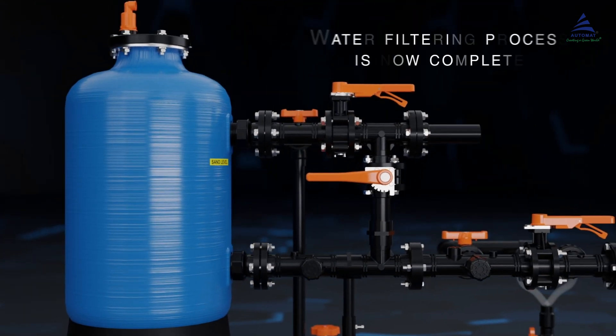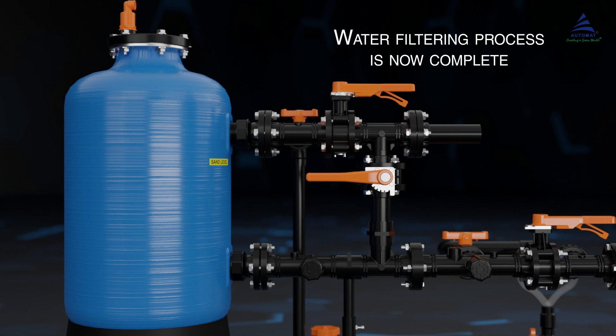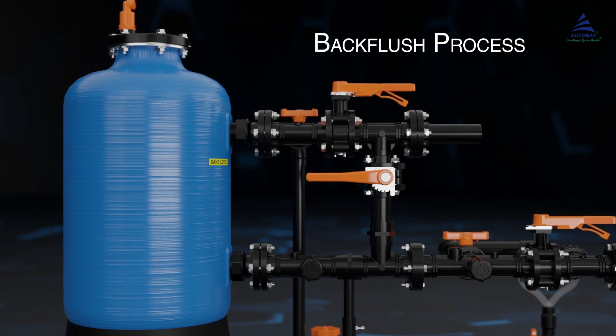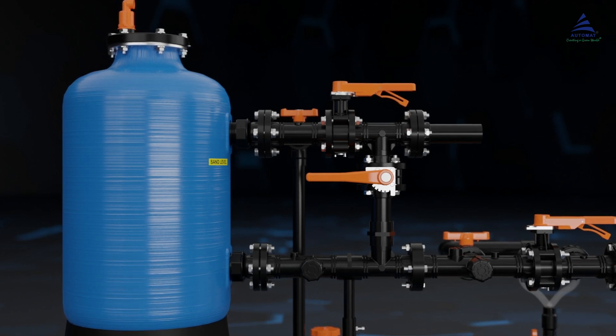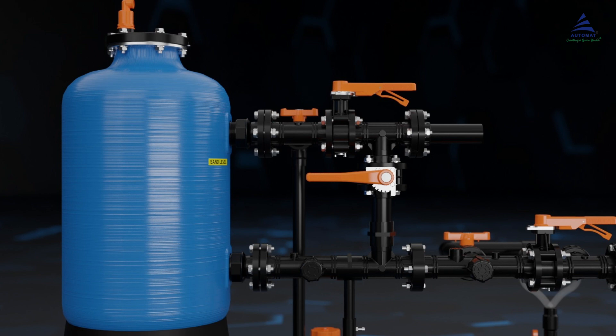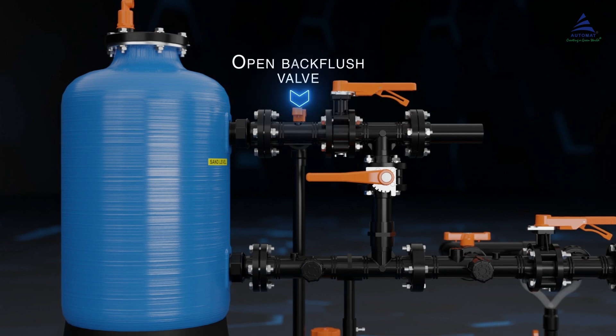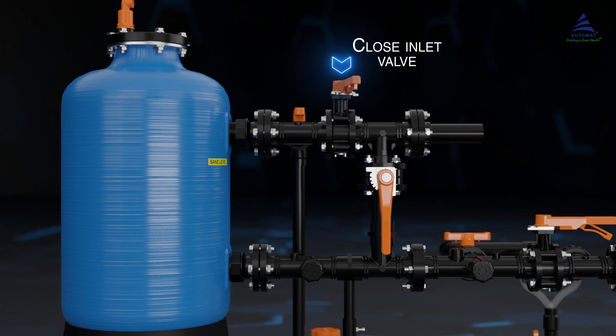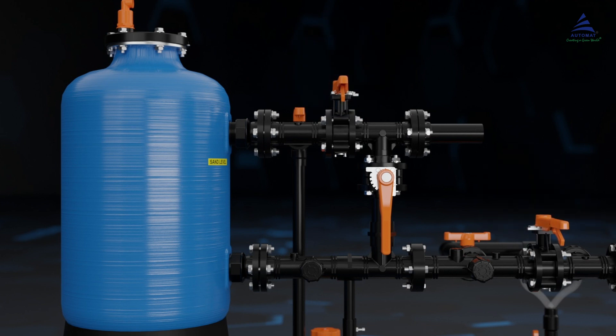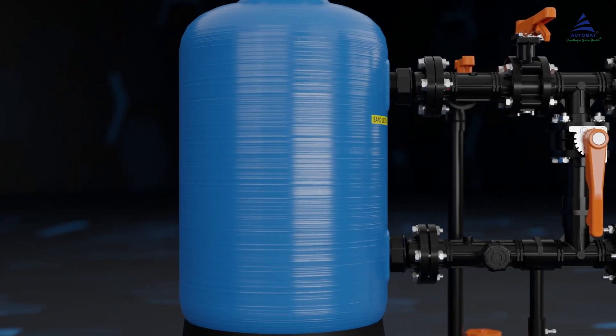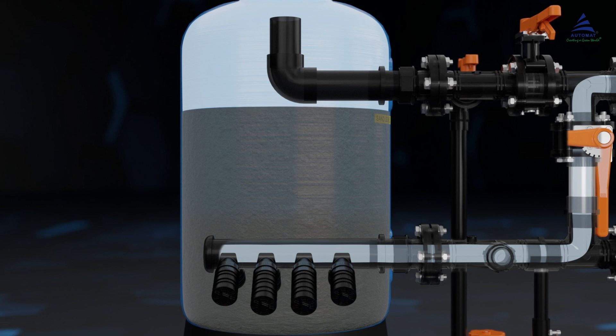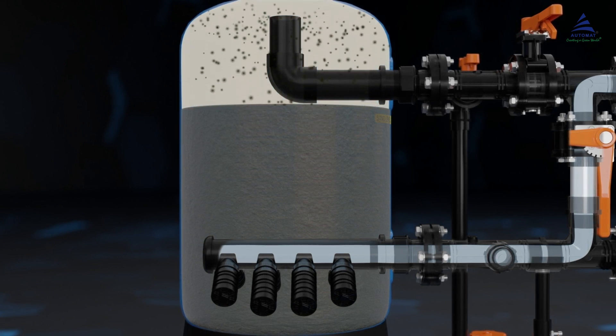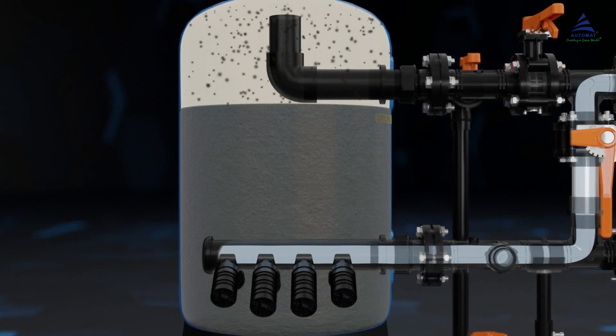Now let us understand the backflush process. In order to start the backflush process, we must simultaneously open the backflush and bypass valves while closing the inlet and outlet valves. Through this process, we clean the sand inside the filter by removing the impurities. The impurities in the tank float above the sand and are discharged through the backflush port.